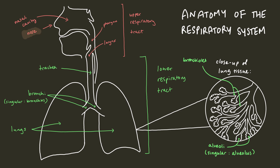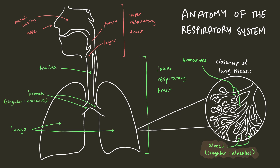We have our nose, that's connected to our pharynx, that's connected to our larynx. This is collectively referred to as the upper respiratory tract. Our larynx is connected to our trachea, that's connected to our bronchi. In our lungs, our bronchi split into bronchioles, split into alveoli, which are tiny air sacs where our red blood cells pick up the oxygen that we breathe in. This is collectively referred to as the lower respiratory tract.